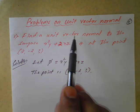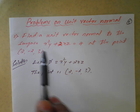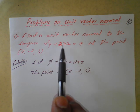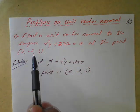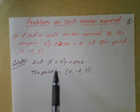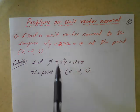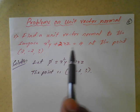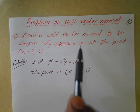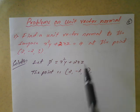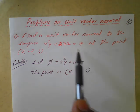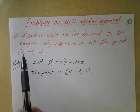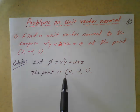The example is: find a unit vector normal to the surface. The surface value of phi is x-squared y plus 2xz equal to 4, at the point (2, -2, 3). So phi is x-squared y plus 2xz. Note that the constant 4 is left out since its partial derivative is zero. The given point is (2, -2, 3).